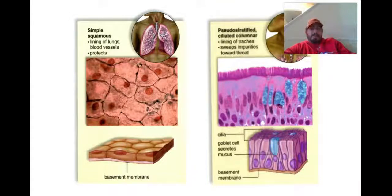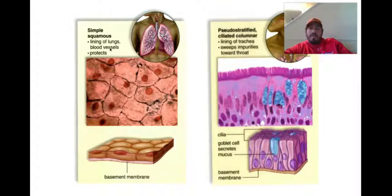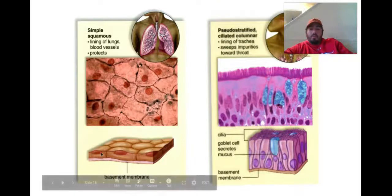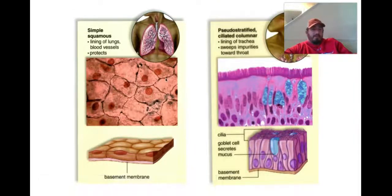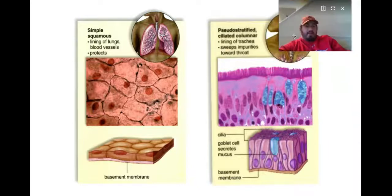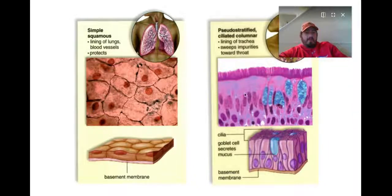Here are some more examples with detailed pictures — take a screenshot if you want to save them. Simple squamous: one layer found in your lungs. Pseudostratified columnar with cilia reaching up would be in our trachea, going down to our lungs, helping to move stuff.